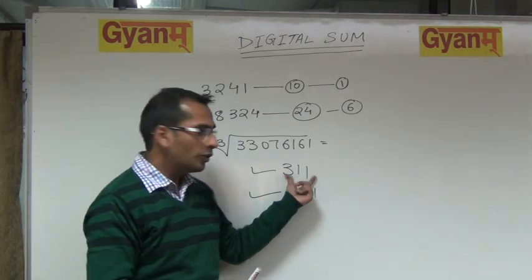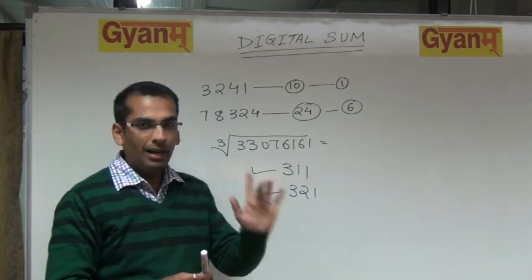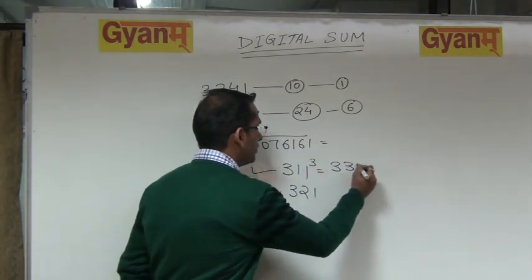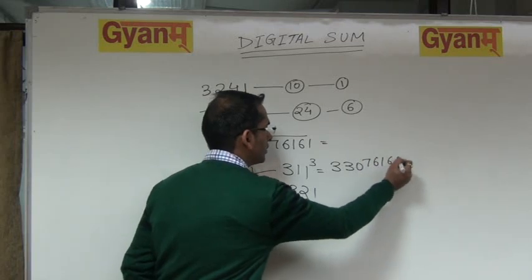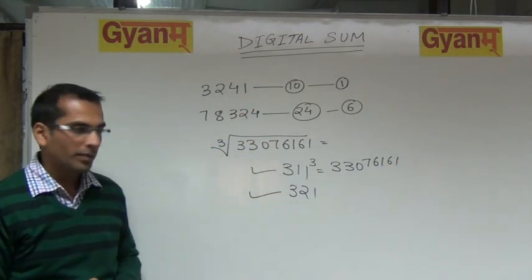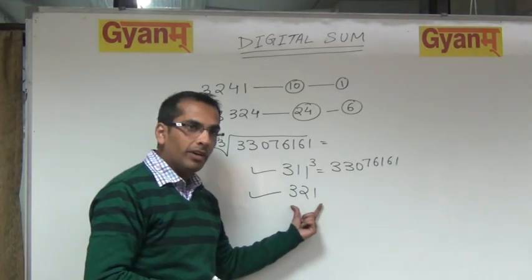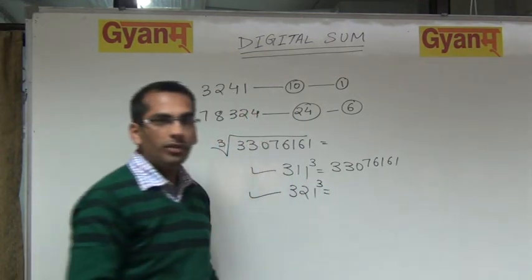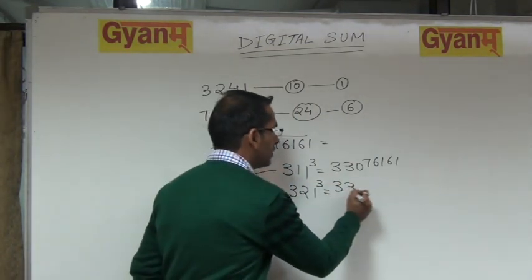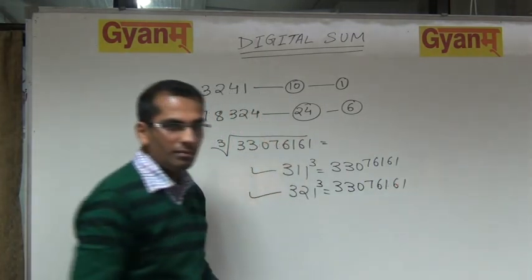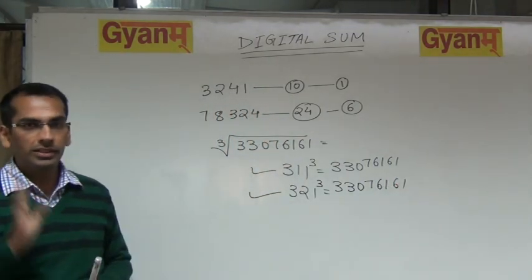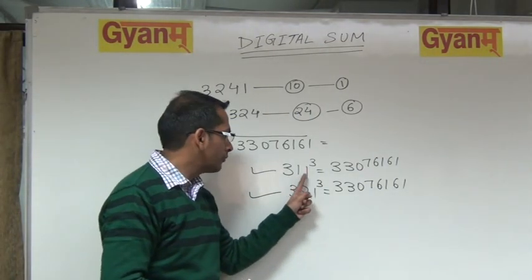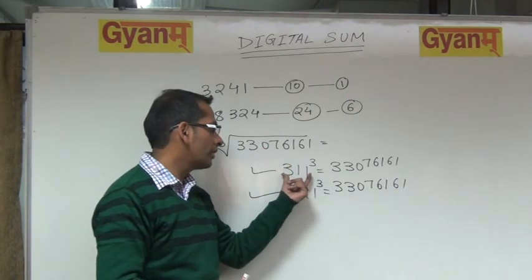If 311 is the cube root of this number, then the cube of 311 should be equal to 33,076,161. Or, if 321 is the cube root, then the cube of 321 should be equal to 33,076,161. Now we will verify. What is 3 plus 1? 4. What is 4 plus 1? 5. So 5 is the digital sum of 311.